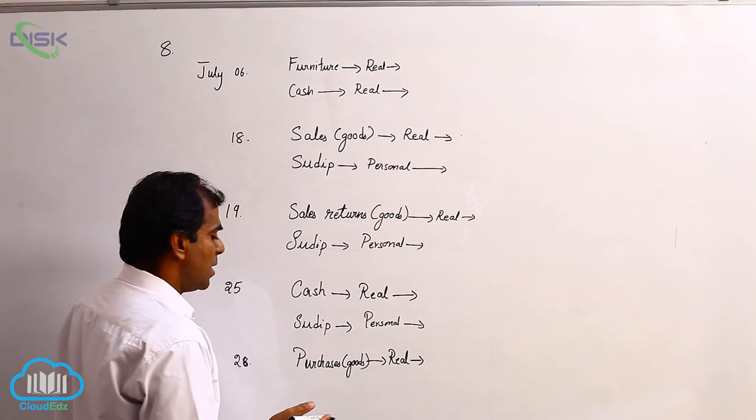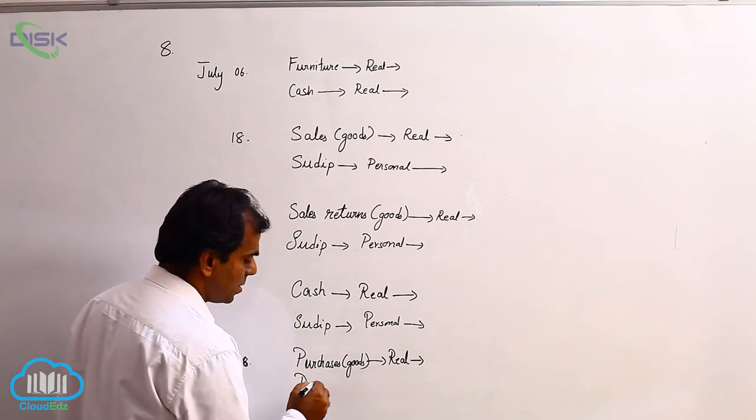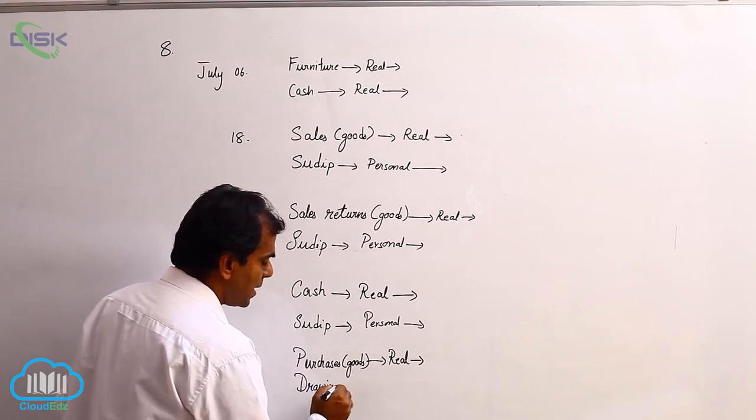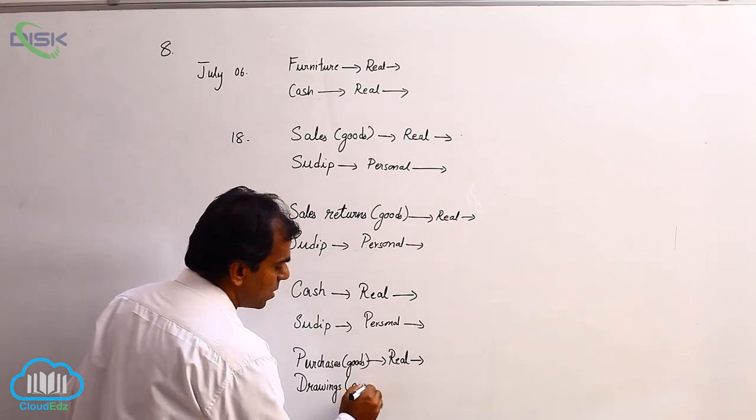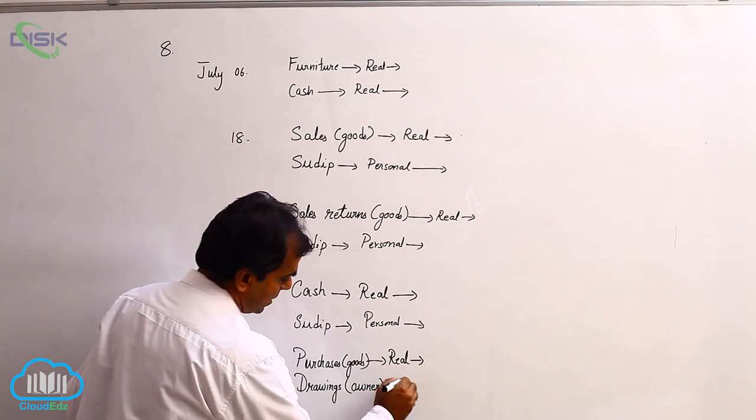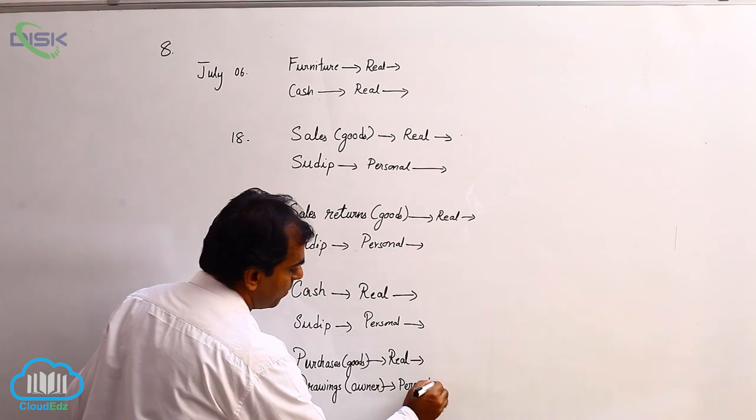Sudip and company. Sudip and company is nothing but in this case, owner of this business. So whenever owner takes anything from the business, we refer the owner with the name drawing. So the word drawings is representing owner. Owner means person, so personal account. So apply the rule of personal account.